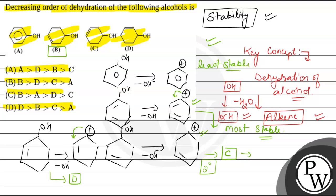So if we compare the stability order, B is more stable than D, than C, than A, and this same order is the final order for dehydration of alcohol. So we can say that the decreasing order of dehydration of alcohol is given in option B. Option B is the correct option. So hope you understood it well. Best of luck. Thank you.